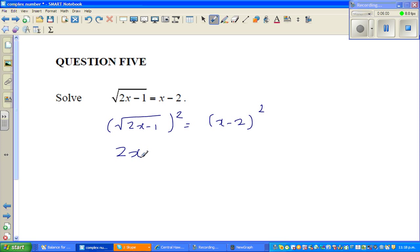When you expand this, you should know this is x squared minus 4x plus 4. Let me make a quadratic equation: 0 is equal to x squared minus 4x plus 4 minus 2x plus 1. Therefore, this would become x squared minus 6x plus 5.